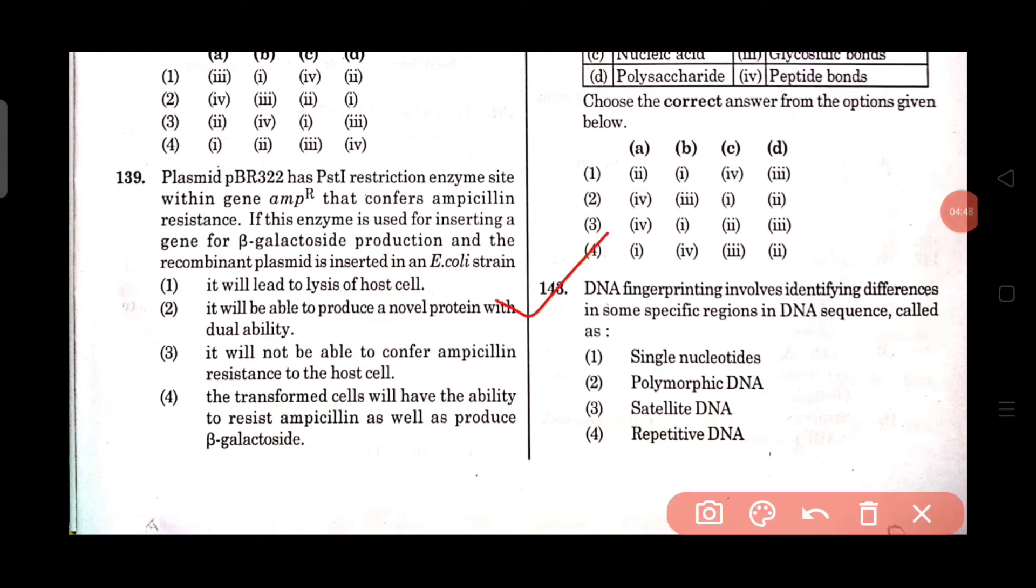Question number 143: DNA fingerprinting involves identifying differences in some specific regions in DNA sequence called as options are single nucleotides, polymorphic DNA, satellite DNA, and repetitive DNA. The right answer is repetitive DNA.